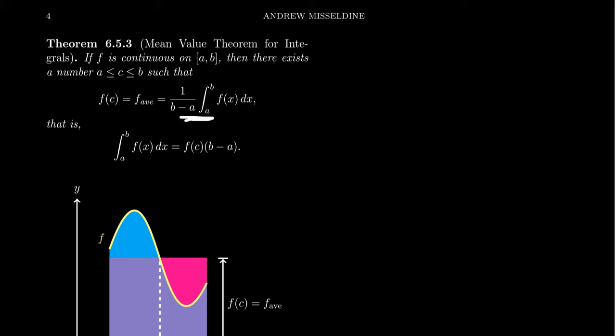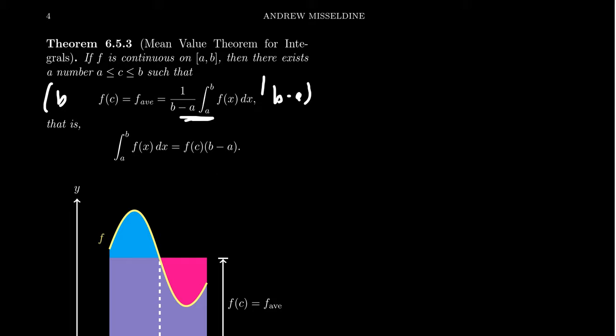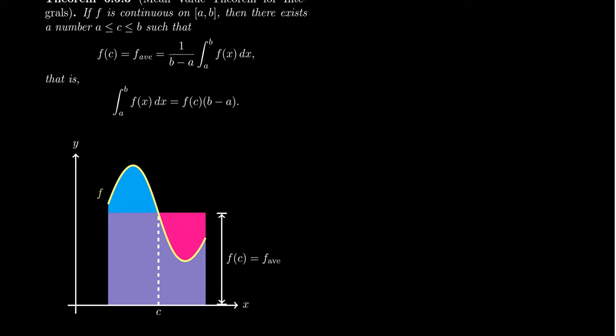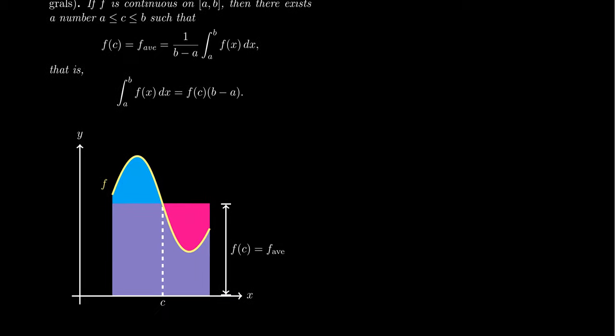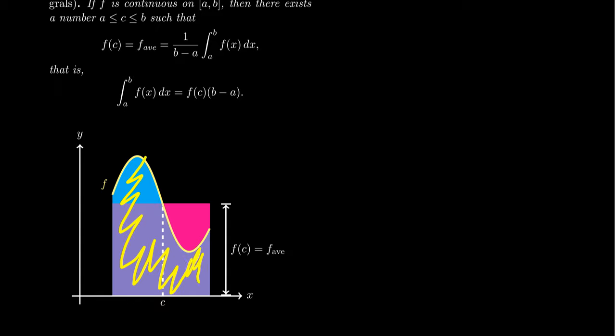Now if you take this equation and multiply both sides by b minus a, you get the integral equal to f of c times b minus a. This second equation has a very interesting geometric interpretation. The left-hand side is the area under the curve — if your function f is given, the area under the curve is this colored region right here.